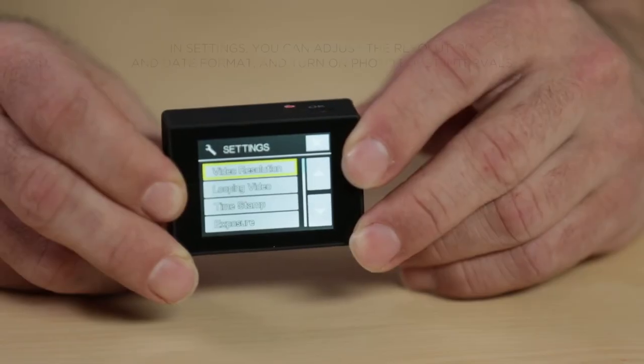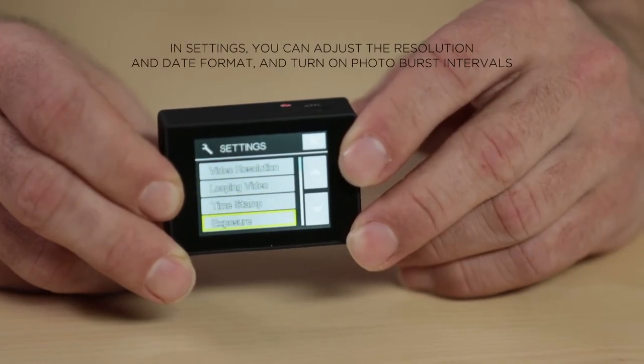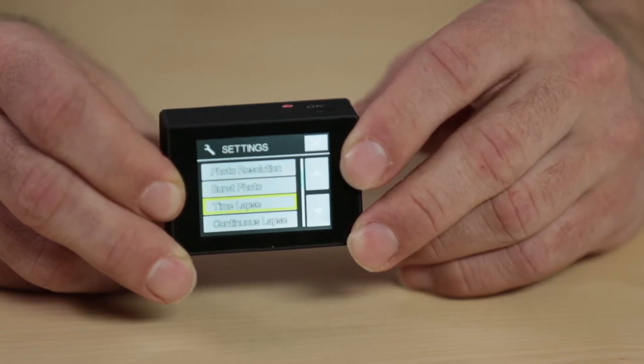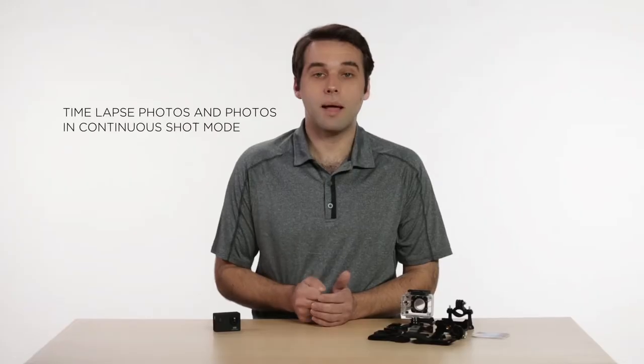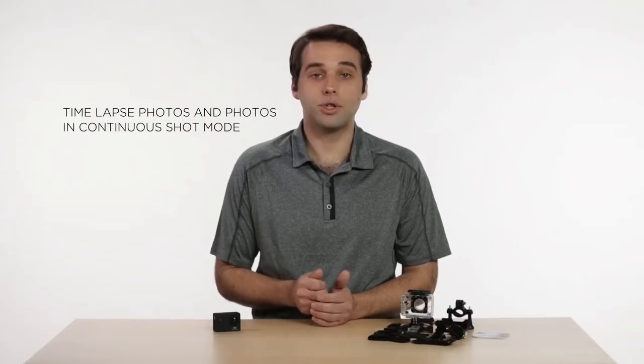In settings, you can adjust the resolution and date format and turn on photo burst intervals. You can also time-lapse photos and take photos in continuous shot mode.